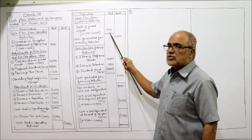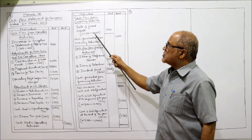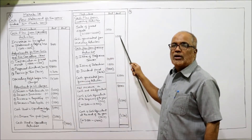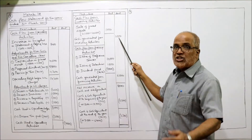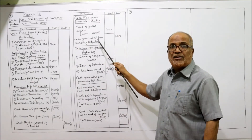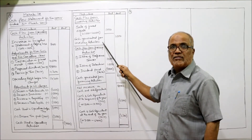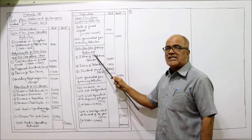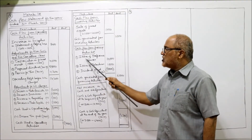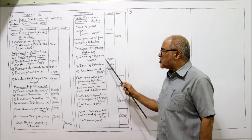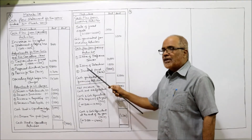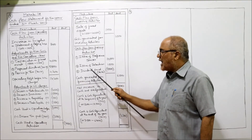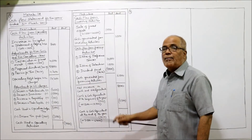Cash flow from investing activity: only one item — sale of fixed asset 1,000 (41,000 minus 40,000). This is a cash inflow. Cash generated from investing activity: 1,000. Cash flow from financing activity: issue of preference shares 10,000, issue of debentures 1,000, and dividend paid — last year's proposed dividend assumed paid during the current year.